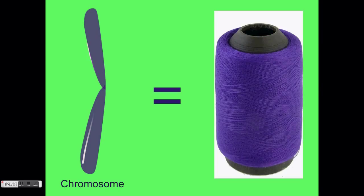A chromosome is similar to a spool of string. The string is like a long strand of DNA, and the spool is like the proteins DNA wraps around. Together, they make a chromosome.